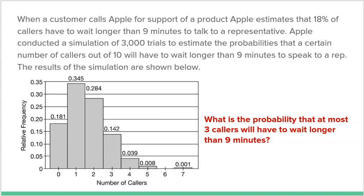Here's our first example. When a customer calls Apple for support of a product, Apple estimates that 18% of callers have to wait longer than nine minutes to talk to a representative. Apple conducted a simulation of 3,000 trials to estimate the probabilities that a certain number of callers out of 10 will have to wait longer than nine minutes. The results of the simulation are shown below.